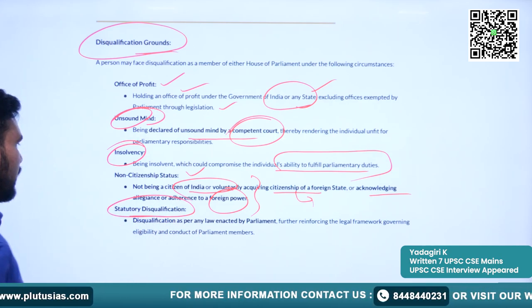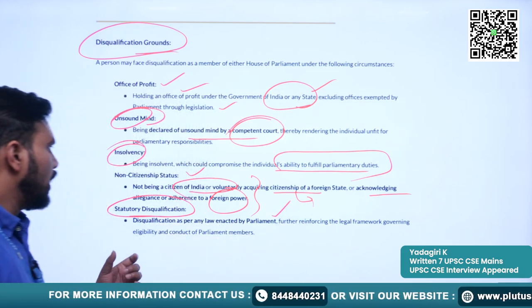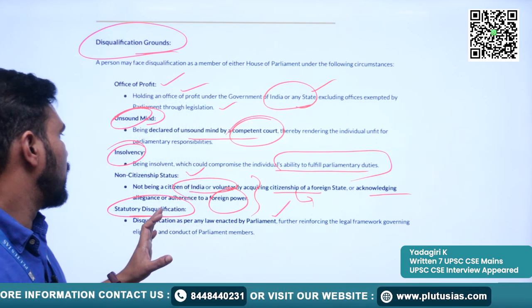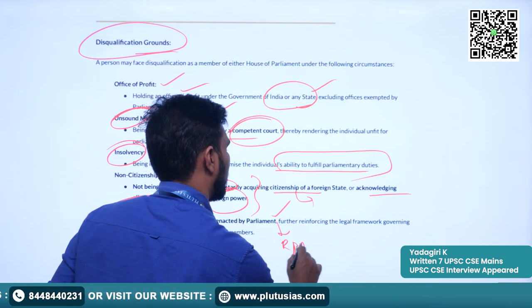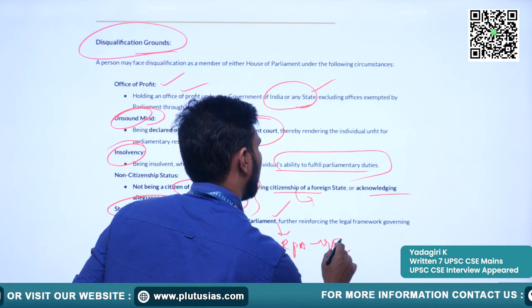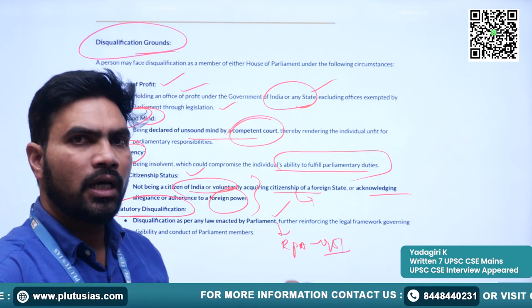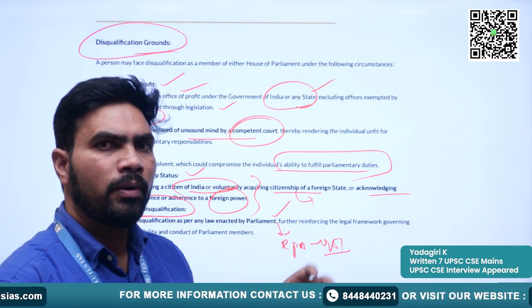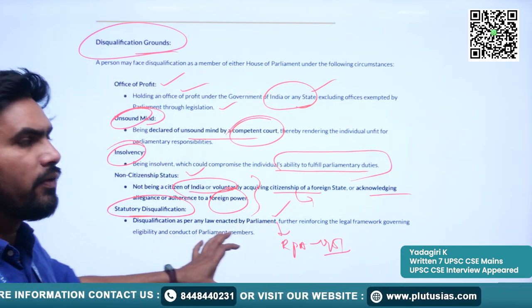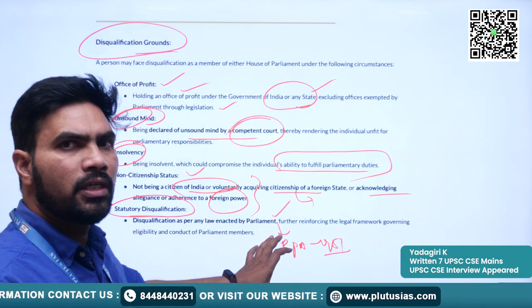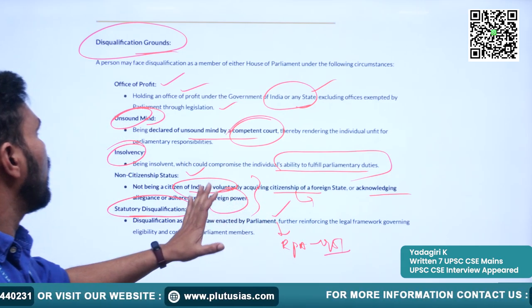Next is statutory disqualification — disqualification as per any law enacted by Parliament. According to this, under the Representation of the People's Act of 1951, there are many disqualifications on which members are disqualified from contesting elections for Parliament. When we discuss the Representation of the People's Act, we will try to understand those disqualifications also.